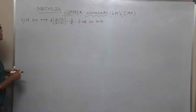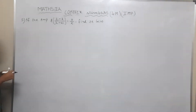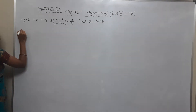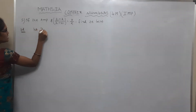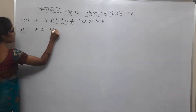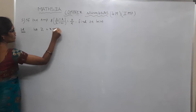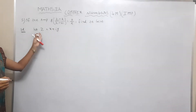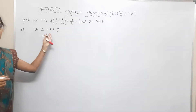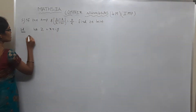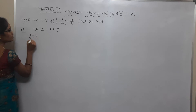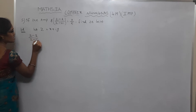Okay, now here is the solution. First, let Z be equal to x plus iy. You have to take this consideration as an assumption: Z is equal to x plus iy. Now first we take this part: Z minus 2 by Z minus 6i.